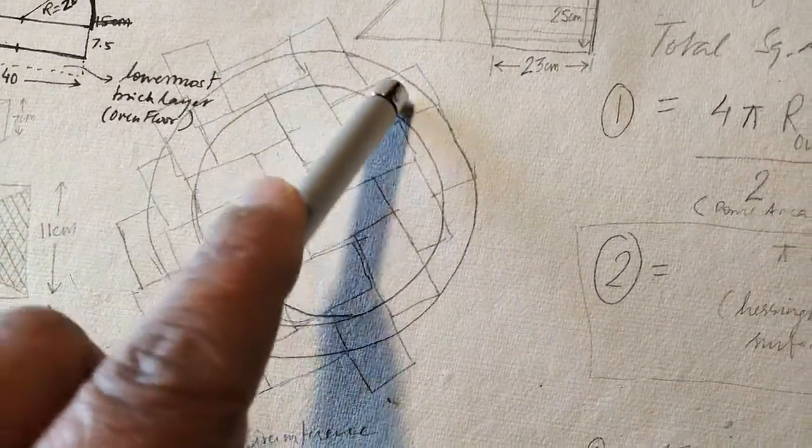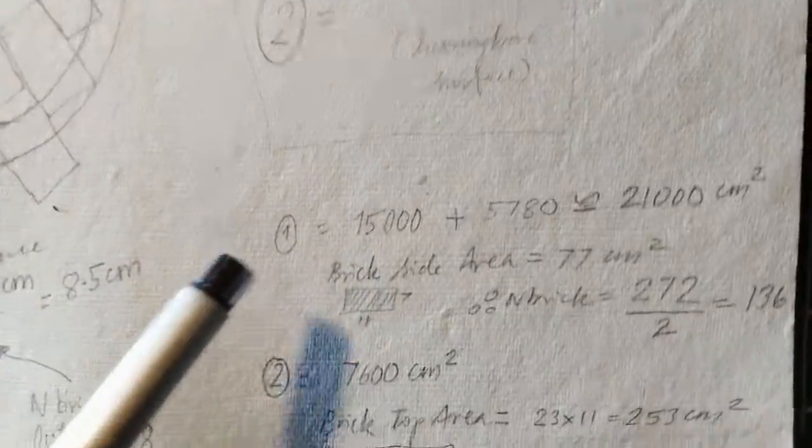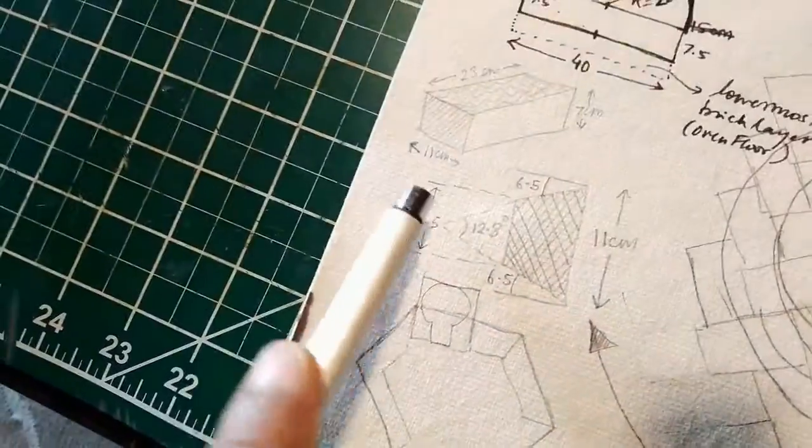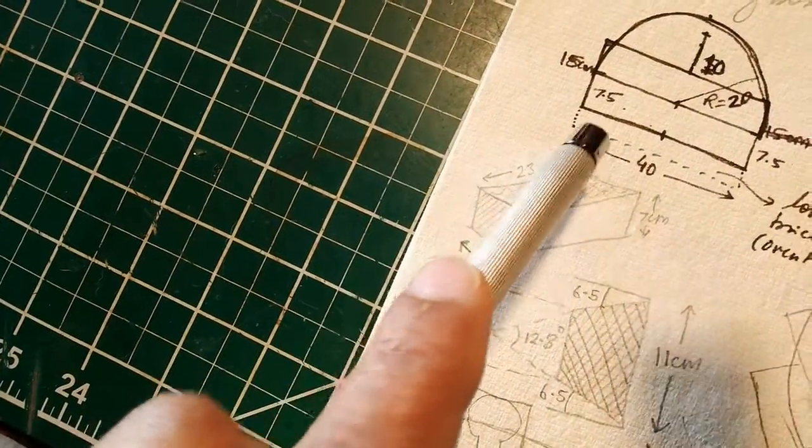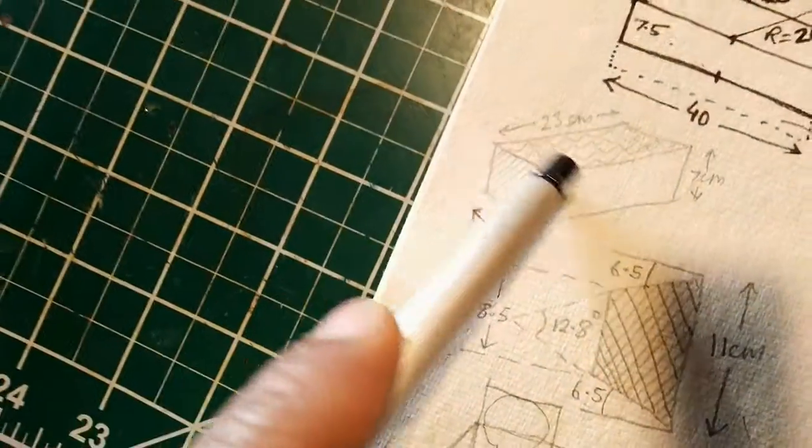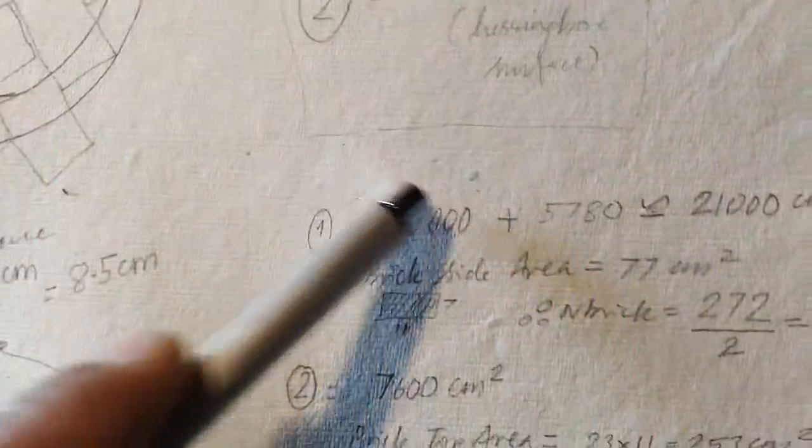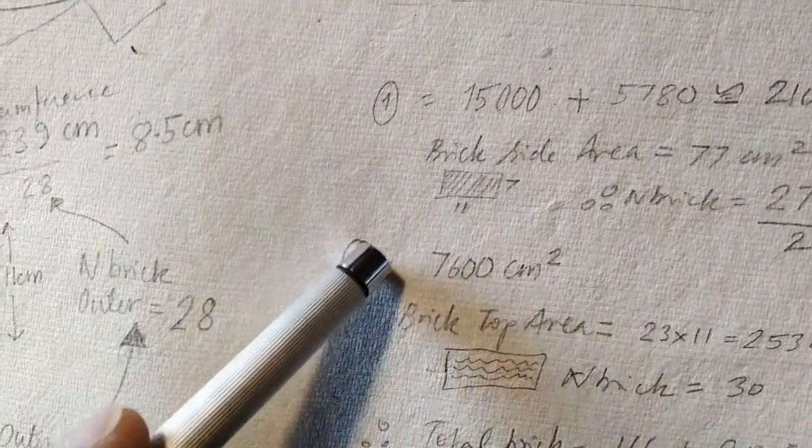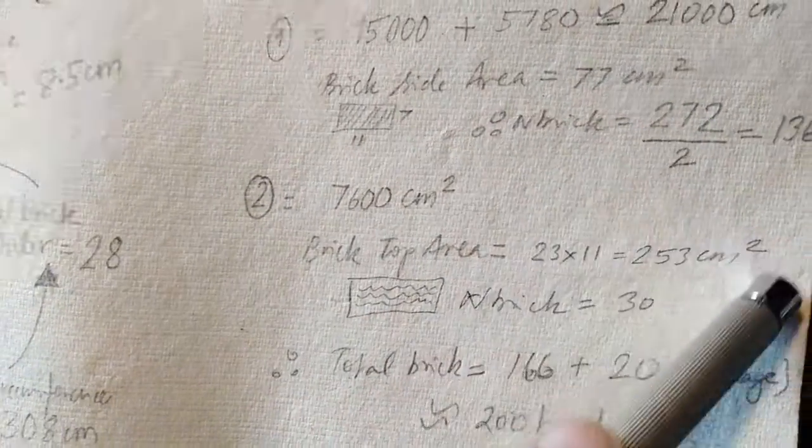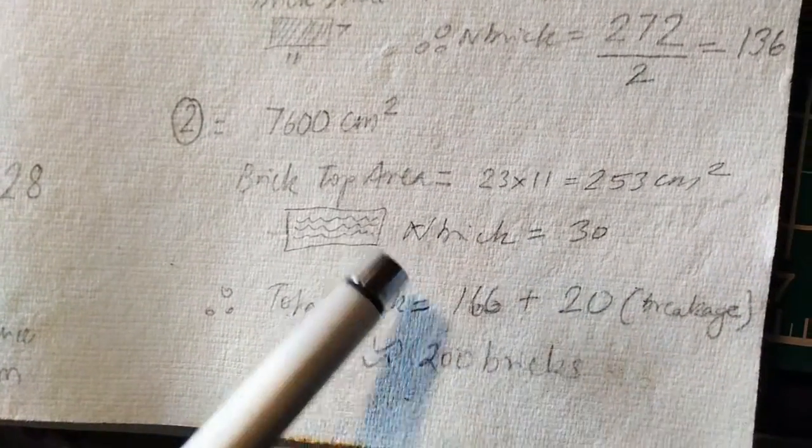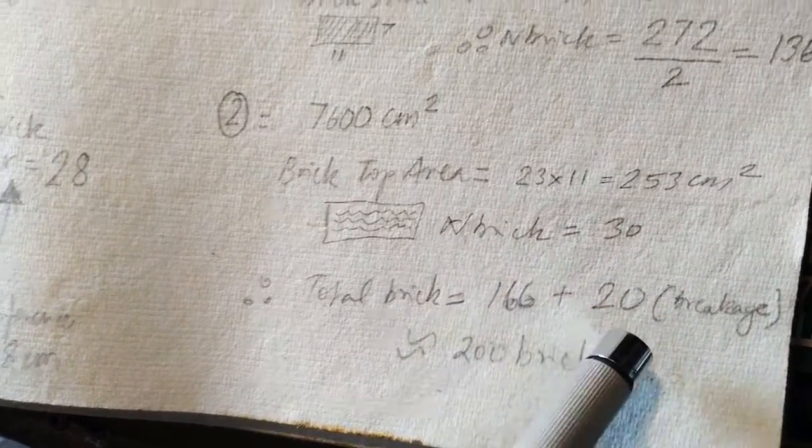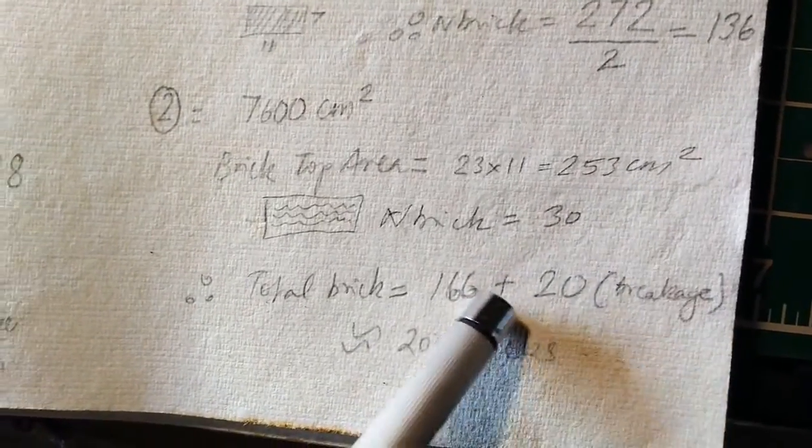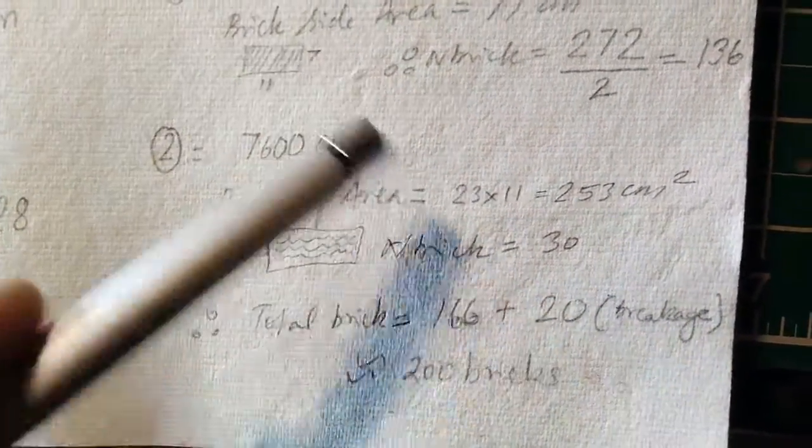That's just pi r squared, and that gives you the number of bricks you need. If you have so much square area and you know the surface area of each brick, in my case it was 23 into 11 centimeters, the surface area of each brick, you add up all the surface areas. I needed about 7.6 square centimeters total area. The number of bricks works out to about 166 bricks, and I added extra to account for breakage, calculation or construction errors, so about 186. I figured I needed about 200 bricks in total.